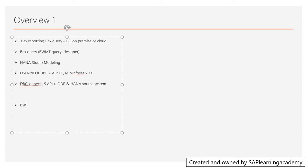If you have BW BI Content, that has to be converted into the BW on HANA starter add-on. Regarding APD in BW — the Analysis Process Designer, which we used to use to directly write to the ADSO or DSO — now we have to use the HANA-based analysis process.